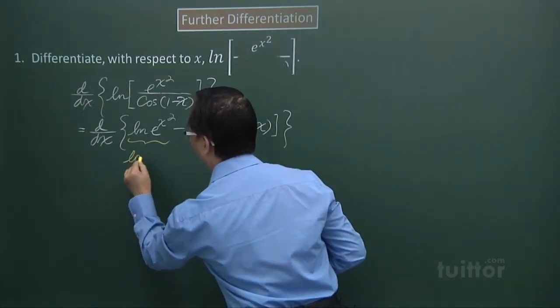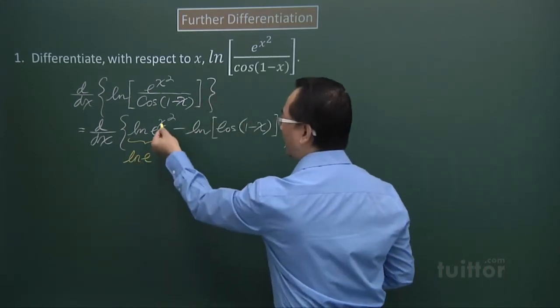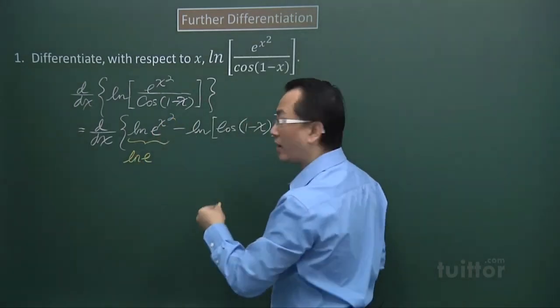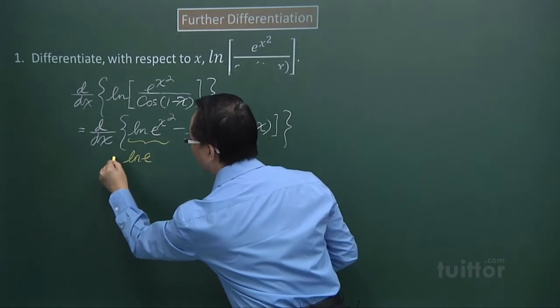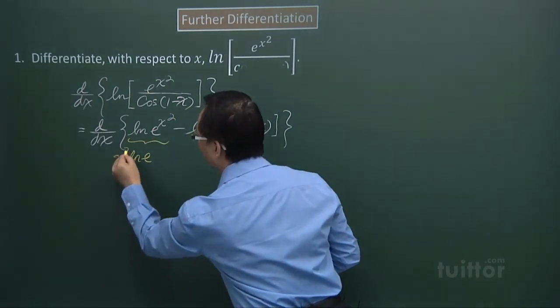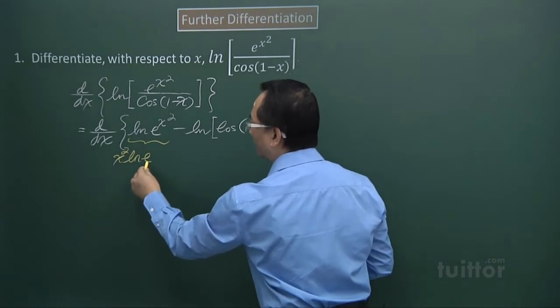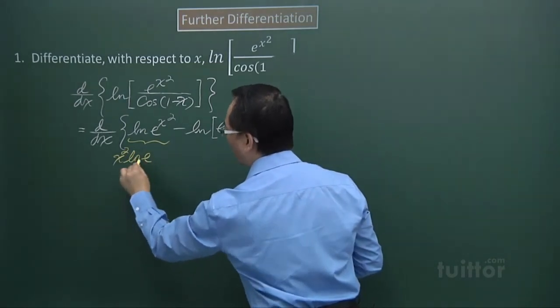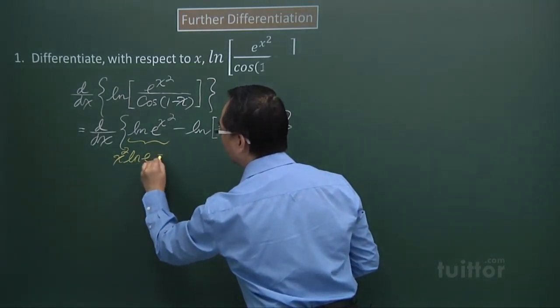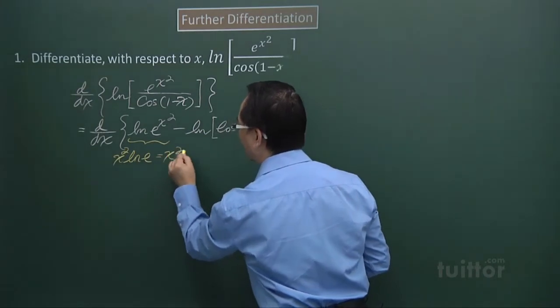So ln e, that power x squared will be transferred to the coefficient position. So this will give me a 1. So eventually, I just have x squared here.